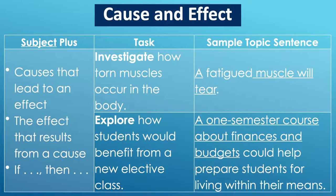Cause and effect is a popular form of expository in which you list causes that lead to an effect. Here is one from a health or PE class: investigate how torn muscles occur in the body. What causes torn muscles? What is the effect?